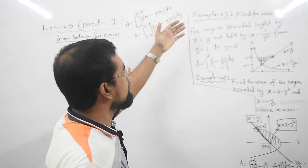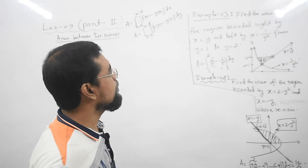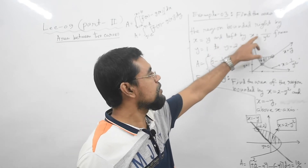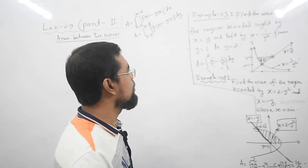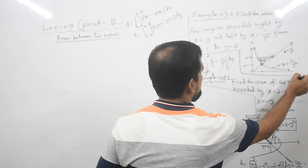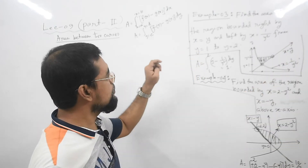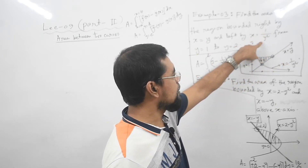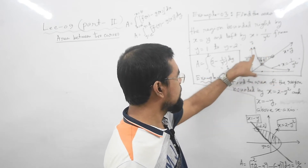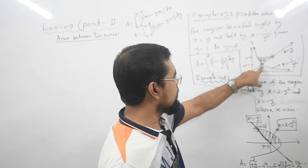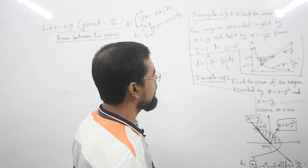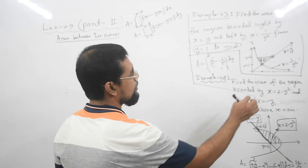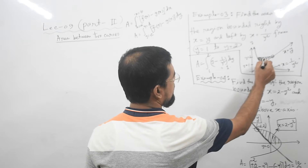Now let's try to understand Example 3. It says find the area of the region bounded on the right by x = y and bounded on the left by x = 1/y², from y = 1 to y = 3. If you draw x = y it will be this straight line, and x = 1/y² will be this curve. Both of them intersect at (1, 1), and you need to calculate the area of this region.